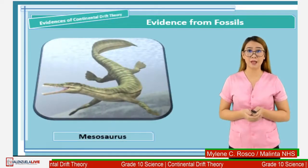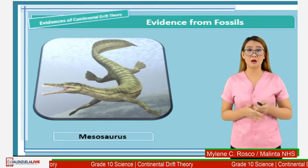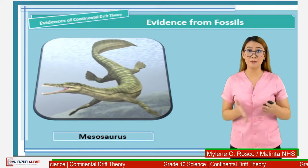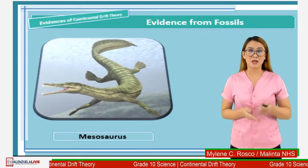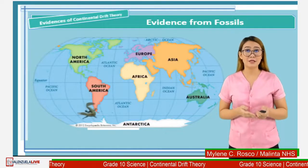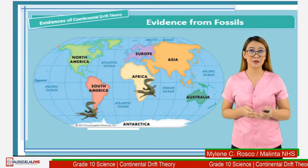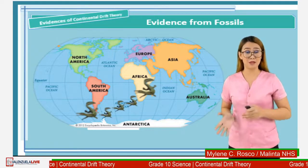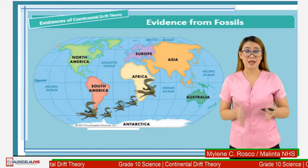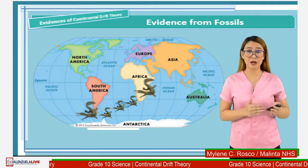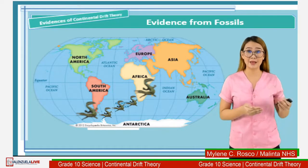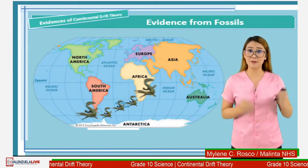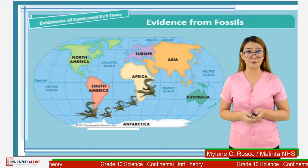First are the Mesosaurus reptiles. Fossils of Mesosaurus are found in different continents. Mesosaurus are freshwater reptiles, just like the modern crocodile, and can swim by propelling itself using its legs and tail. Mesosaurus fossils are found in both South America and Africa. It is not possible that Mesosaurus swam across the Atlantic Ocean to travel from one continent to another, as that distance would be impossible for it to cross.